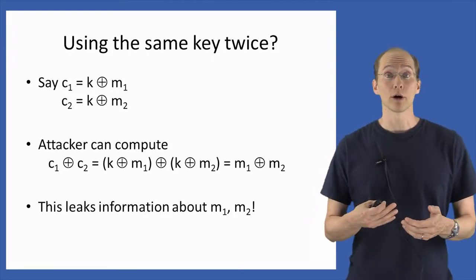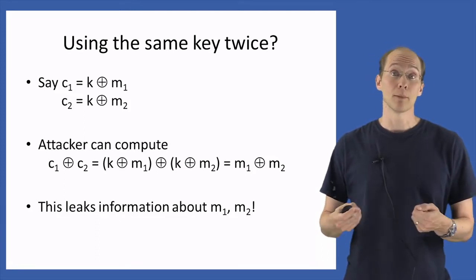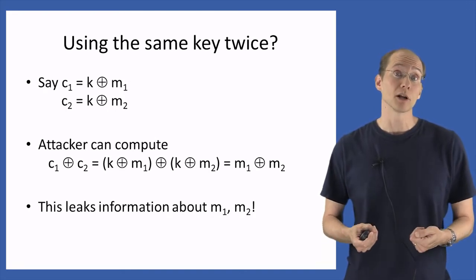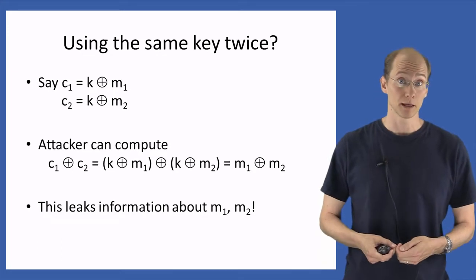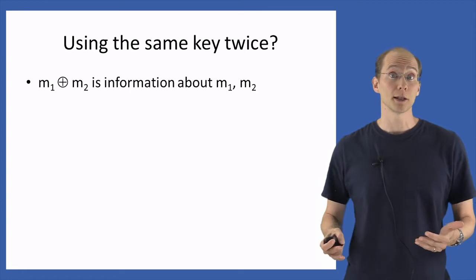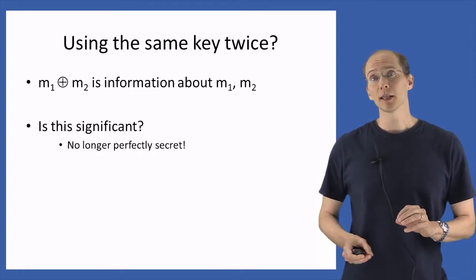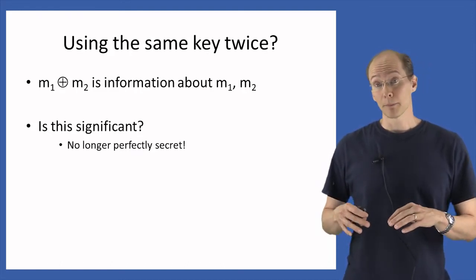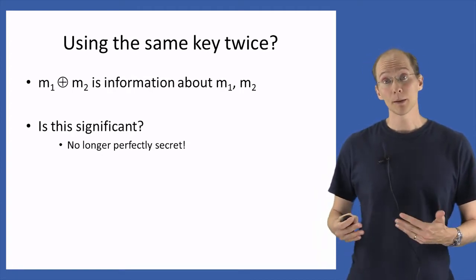This may not be information about M1 or M2 individually, but it does represent information about M1 and M2 jointly. That's something that would be ruled out by any definition of perfect secrecy for encrypting two messages using the same key. I want to stress that this is not just a technical point that we've leaked some information — it can in fact represent some significant information to an attacker.